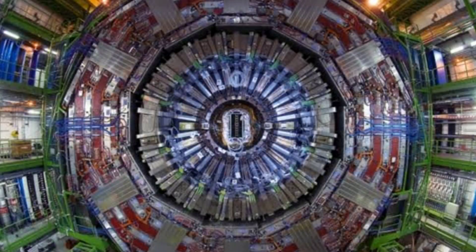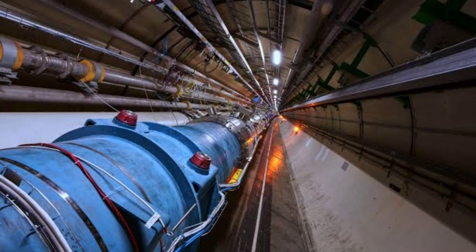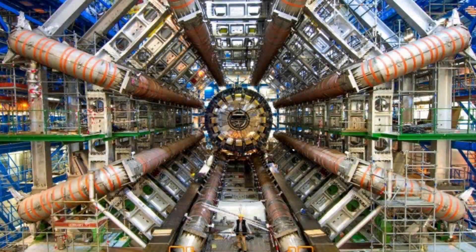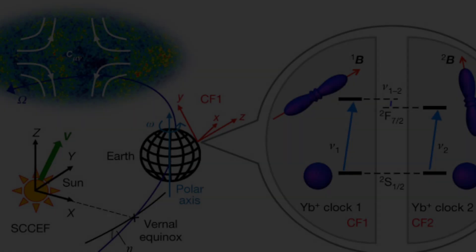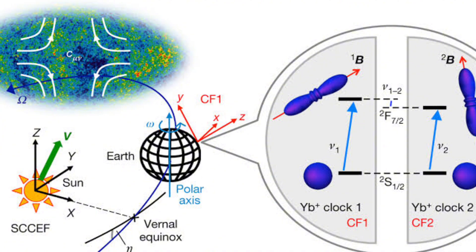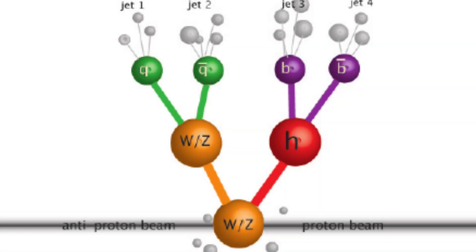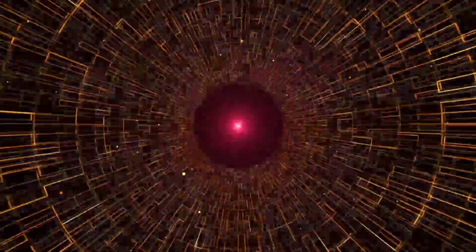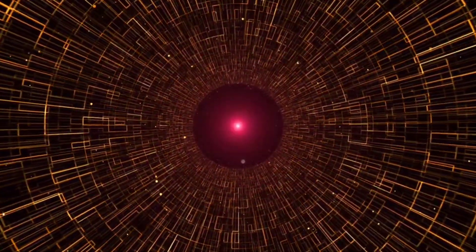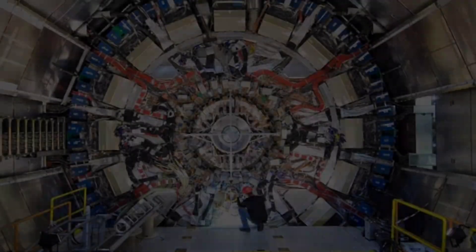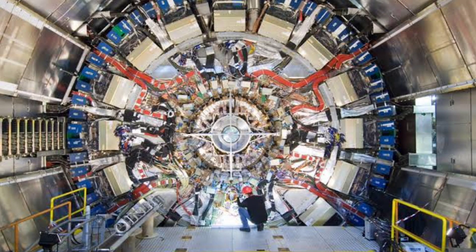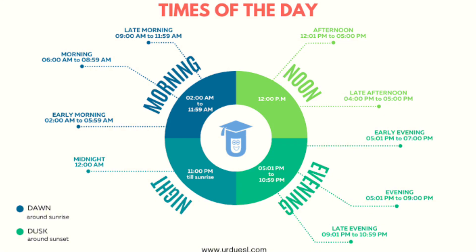To test whether top quarks violate Einstein's special relativity, researchers used the Large Hadron Collider, the world's most powerful particle accelerator. Their goal: to see if Lorentz symmetry holds up when top quarks are produced in proton collisions. If relativity were to break down, they'd expect to see changes in the rate of top quark pair production depending on the time of day. Why does the time of day matter?